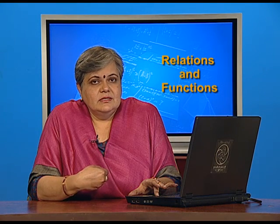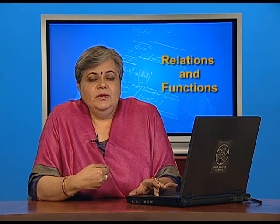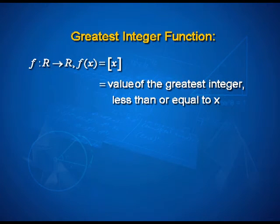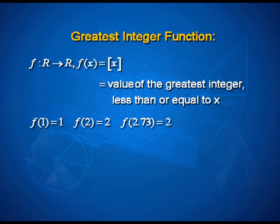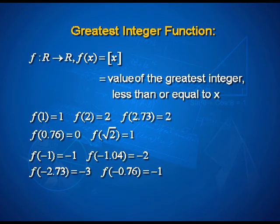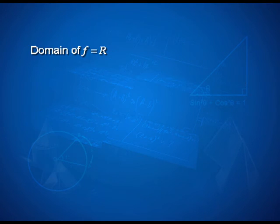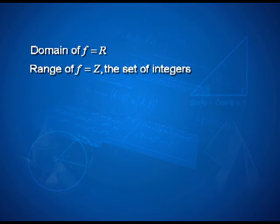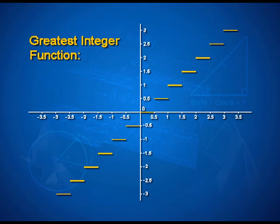The greatest integer function is one of the very significant and unusual ones. It is defined to be the value of the greatest integer less than or equal to x. So f(2) = 2 and f(2.73) = 2 — the greatest integer less than or equal to 2.73 is 2. Similarly, f(−1.04) = −2, since the greatest integer less than −1.04 is −2. The domain is all real numbers, but the outputs are always integers, so the range is the set of integers. The graph looks very interesting — it forms a step-like pattern. Therefore the greatest integer function is often called the step function. Try plotting this on your own on graph paper.